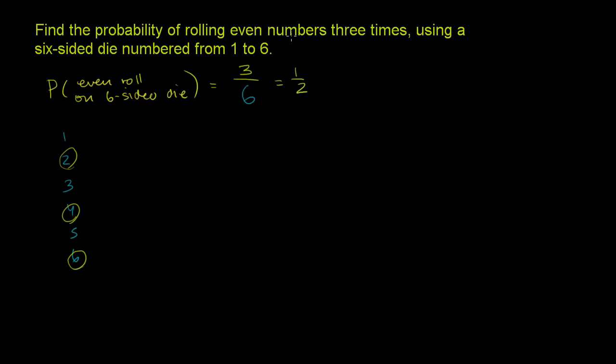Now, they want to roll even three times. And these are all going to be independent events. Every time you roll, it's not going to affect what happens in the next roll, despite what some gamblers might think. It has no impact on what happens on the next roll.